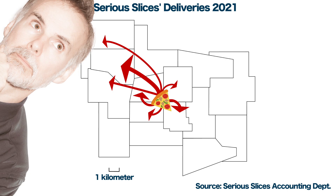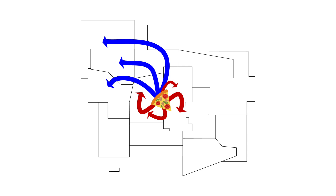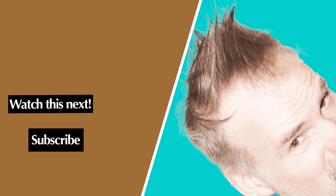In summary, a flow map is an effective way to visually demonstrate how the movement of goods, such as Sirius Slices' pizzas, can vary over a geographic area. Also, various shapes, lengths, widths, and colors of lines can be used to show the direction and the magnitude of the movement under investigation. Thinking about movement, it's time to move on to another way to visualize data so that you can make your point.